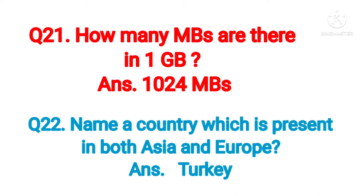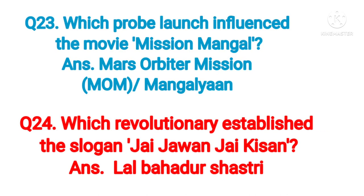Question number twenty-one: how many MBs are there in one GB? Answer: 1024 MB. Question number twenty-two: name a country which is present in both Asia and Europe. Answer: Turkey.